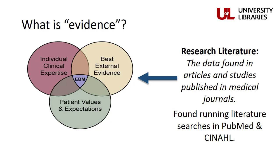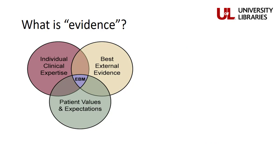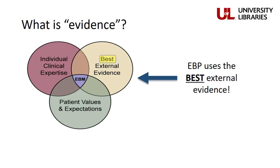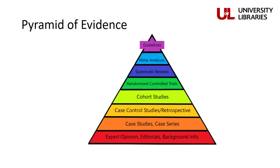To find this literature, one must run a literature search in a research database, like CINAHL or PubMed. Evidence-based practice uses the best external evidence — not just the first evidence available. This implies that not all evidence is created equal, and that there must be different levels or hierarchies of research literature. To illustrate this concept, let's look at the pyramid of evidence.